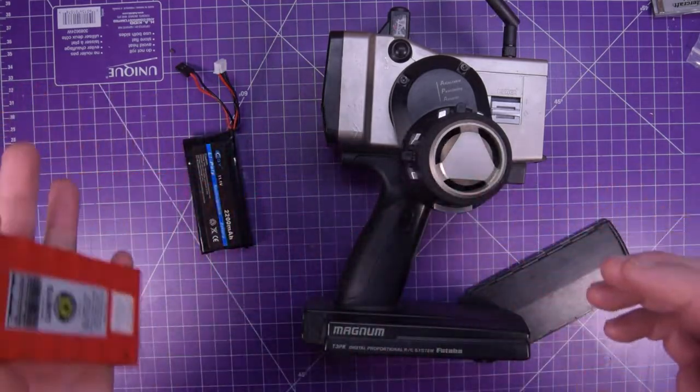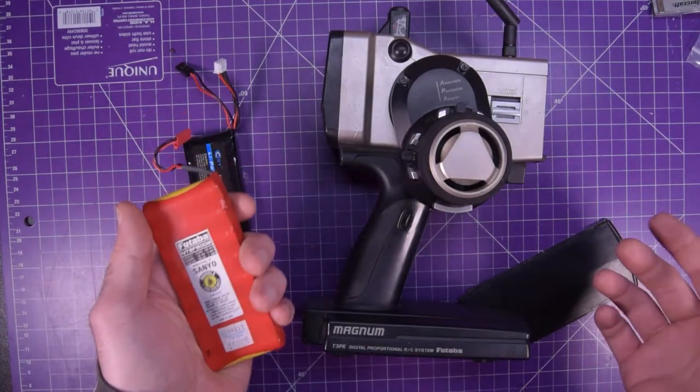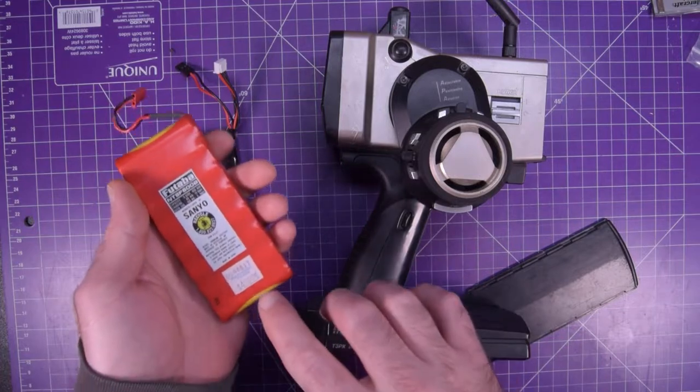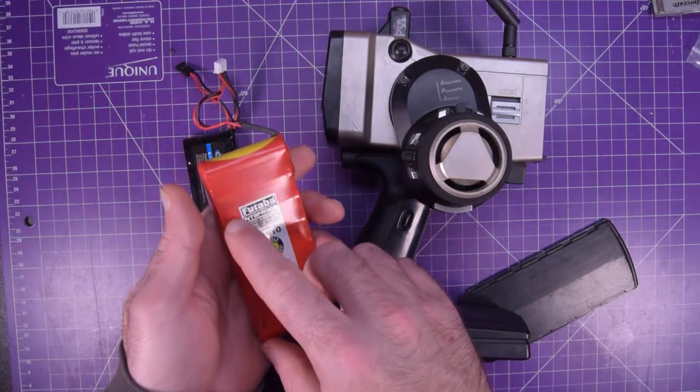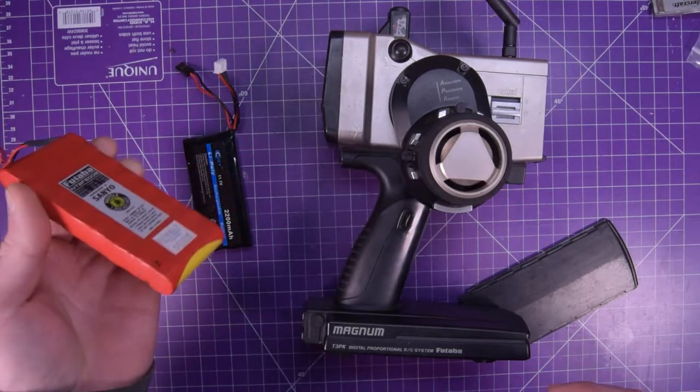And so most controllers today will use something like an 18650. Problem is, this thing runs on 12 volts. As you can see, 1, 2, 3, 4, 5, 6, 7, 8 batteries, 1.5 volt a battery, 12 volts.